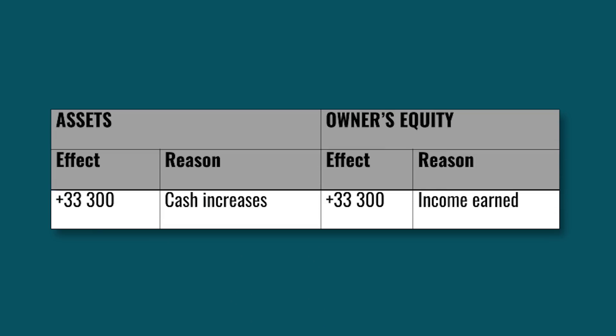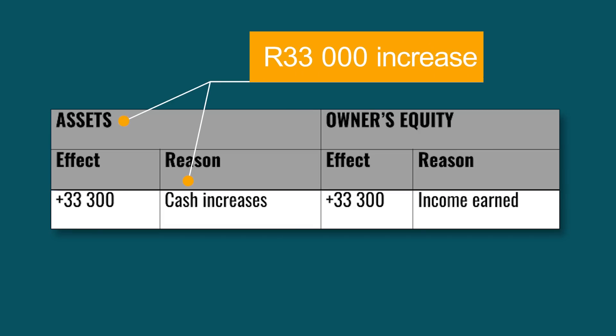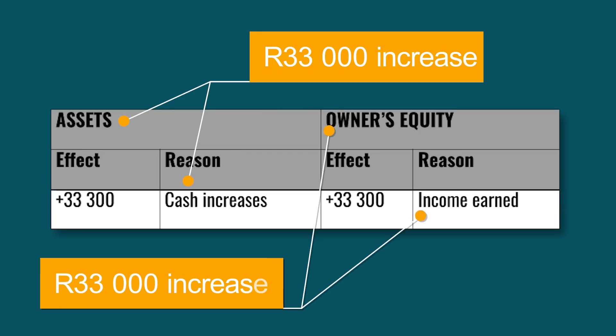Let's look at the effect of this transaction on the account. Similar to the previous example, the table is divided into two. On the asset side, the effect is a plus 33,000 rand — because cash increases. On the owner's equity side, the effect is also a plus 33,000 rand — because income was earned.